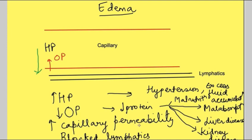Increased capillary permeability can occur with local injury — we all experience swelling at the site of injury — or with infection, both of which increase the spaces between endothelial cells. Blocked lymphatics can occur in filariasis, which is a parasitic infestation, or when there is metastasis of cancerous cells to lymph nodes, which can also cause blockage of the lymphatics.